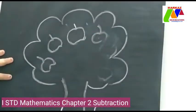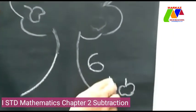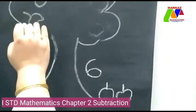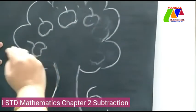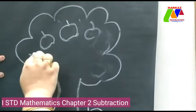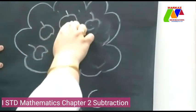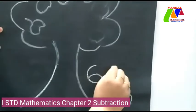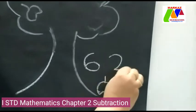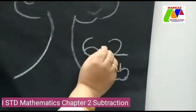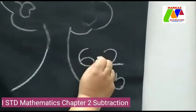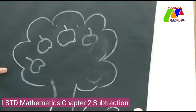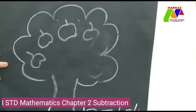How many apples fell down? 2 apples fell down. Now how many apples can we see? Please count it: 1, 2, 3, 4. Here we can see 4 apples. How many apples fell down? 2 apples. So 6 minus 2 is equal to 4.